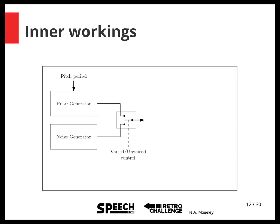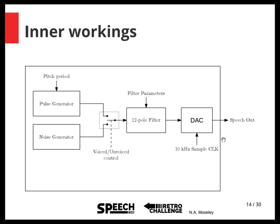This selection is called the voiced or unvoiced control. The output of the source goes into the filter — in this case a 12-pole filter — and as an input we also have the filter parameters which, like the pitch, vary over time. The output of the filter is fed into the digital-to-analog converter, which runs at about 10 kHz on the original chip, and this produces an analog signal for the speech. This is the complete source filter model, where we vary the pitch, filter parameters, and the voiced/unvoiced setting over time.